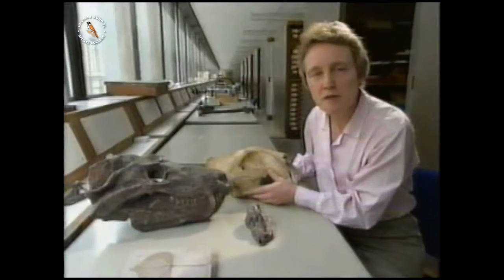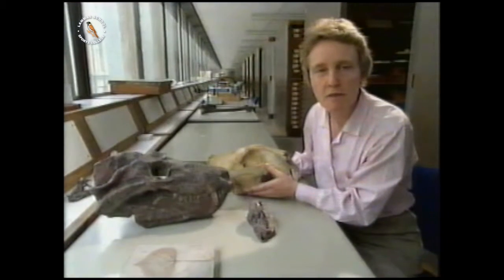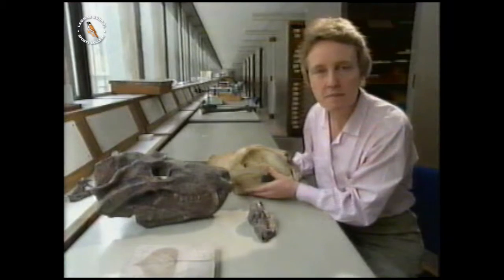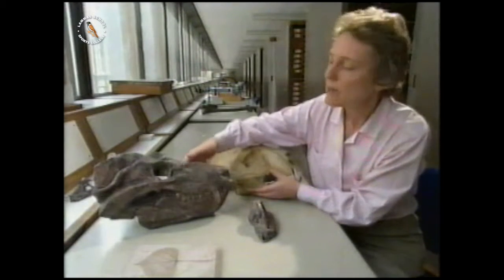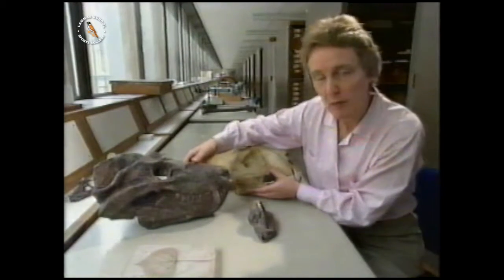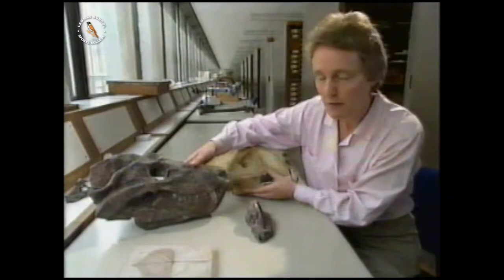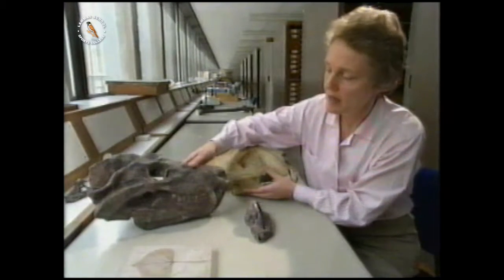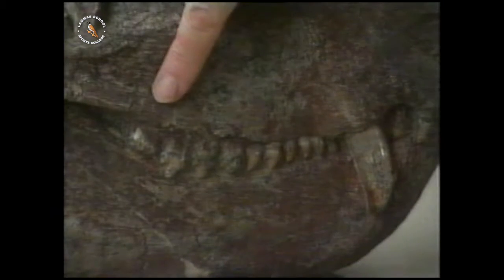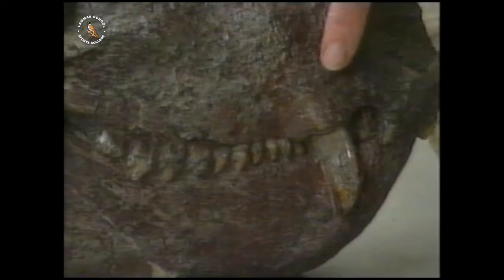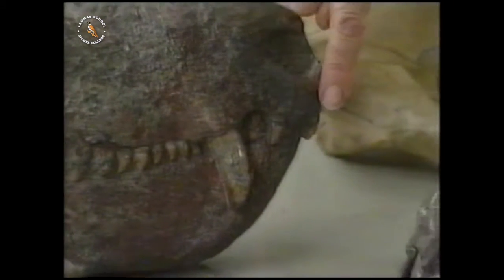If we look at a sequence of fossils through time, we can see changes in features that have led from one animal group to another. This fossil is a reptile belonging to the group that we think mammals evolved from. This specimen is about 240 million years old. Here are the chewing teeth, and they're relatively simple. It also has a long stabbing tooth here and a nipping tooth at the front.